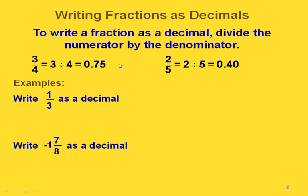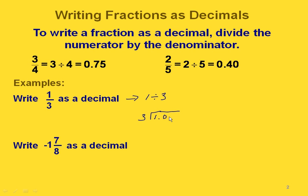Let's do some of our own examples. If we want to write 1 third as a decimal, we're going to divide the 1 by the 3. Since we have two whole numbers, we're going to have to put in a decimal point and some zeros so that we can take this out past the decimal point. Let's write a few zeros in there and see how many decimal places we want to take this out to.